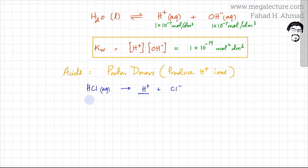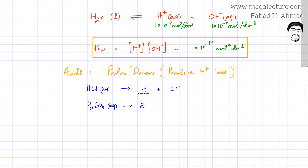Similarly, sulfuric acid H₂SO₄ is also an acid. When mixed in water it becomes aqueous, dissociates, and produces 2 H⁺ ions and 1 SO₄²⁻ ion. These are examples of strong acids.